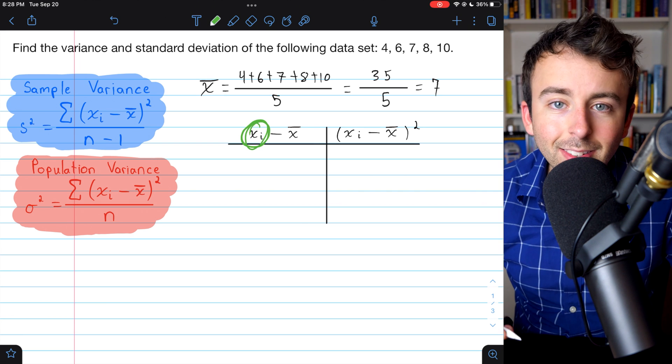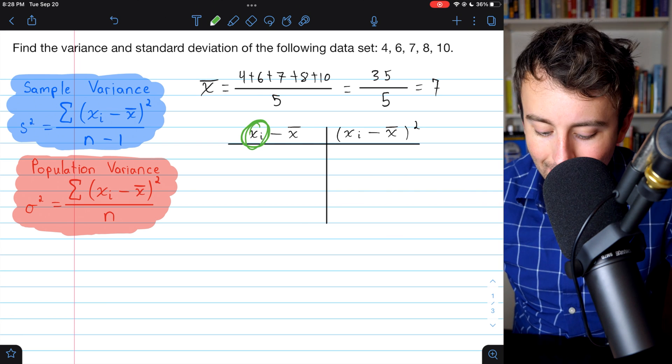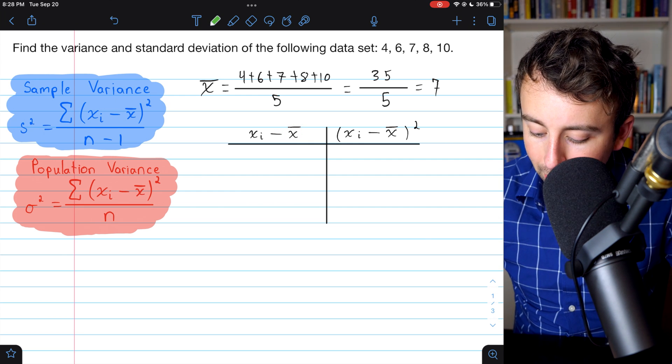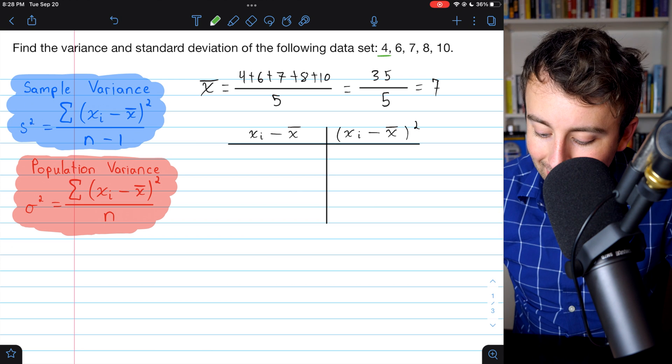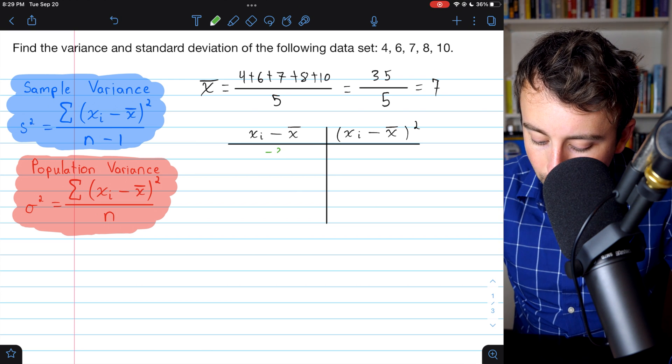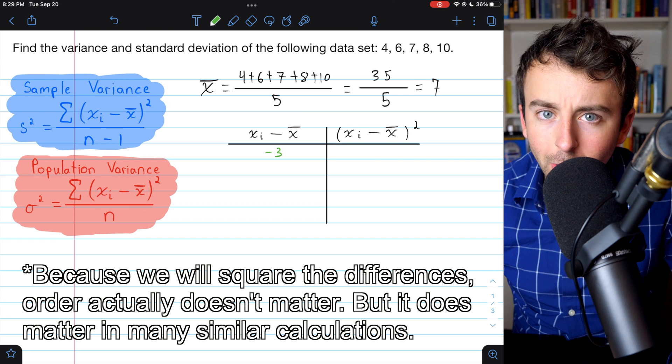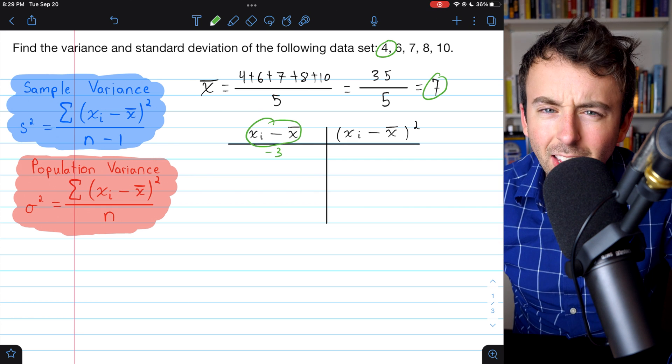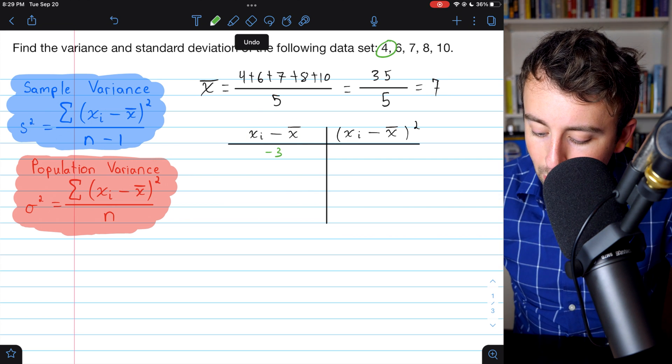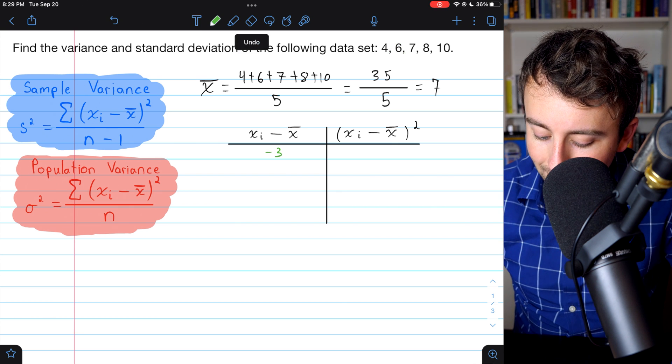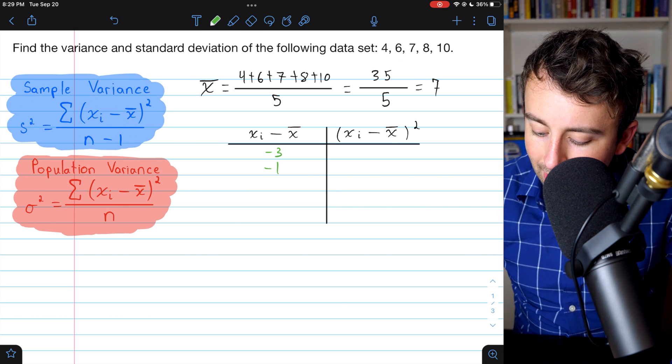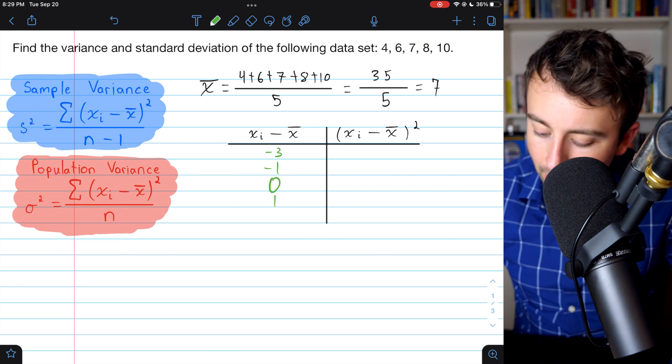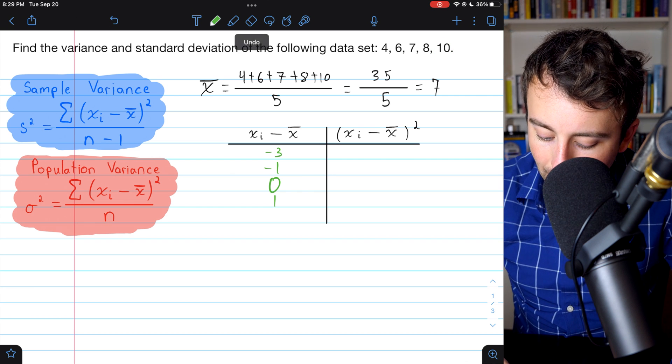So let's start by calculating the differences. Remember, you need to take the data points represented by xi and then subtract the mean in that order. So for example, we'll start with 4. 4 minus the mean of 7 is going to be negative 3. This is why order is important because 4 is less than the mean. So we want to make sure that difference is going to be negative. Then we have 6, which is also less than the mean. 6 minus 7 is going to be negative 1. And then we come to an actual data point of 7. Its distance from the mean is 0. Then we have 8. 8 minus the mean of 7 is 1.